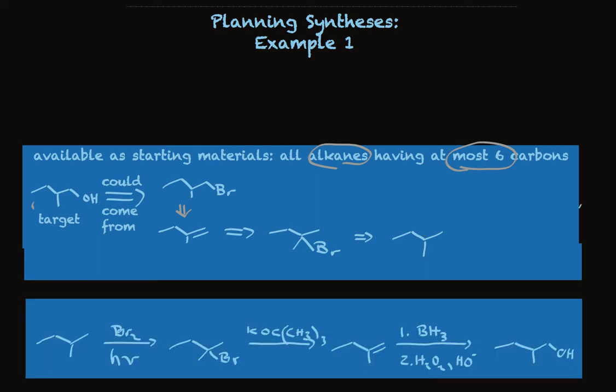So starting with isopentane, we would treat with bromine in light, make this tertiary bromide selectively, use a bulky base so that the elimination would make the terminal alkene, not the more substituted one, and then use borane followed by the oxidizing agent to do anti-Markovnikov addition of water to the double bond to make our primary alcohol.